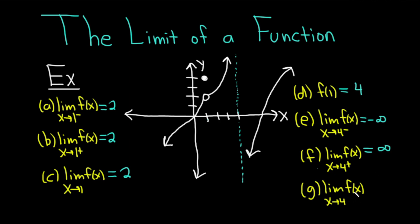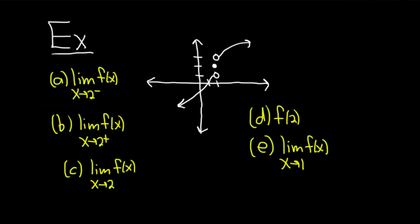Just approaching 4 with no direction — the two-sided limit — we can't get a common answer, so the answer is does not exist. Let's do another example so you can get better at this. Here we have another graph, and we're going to answer the questions based off it.